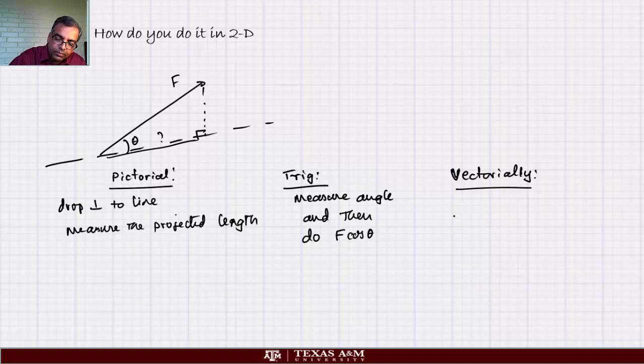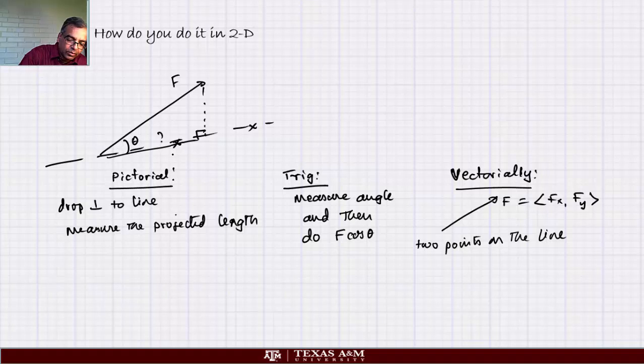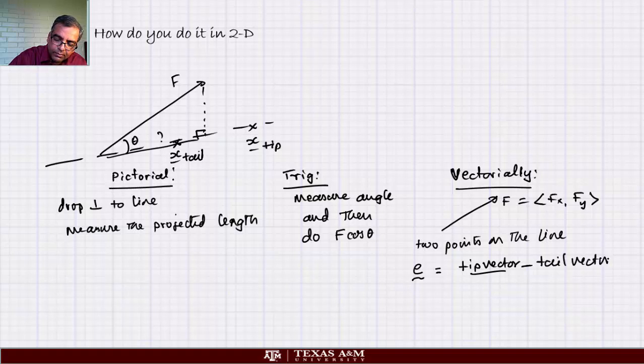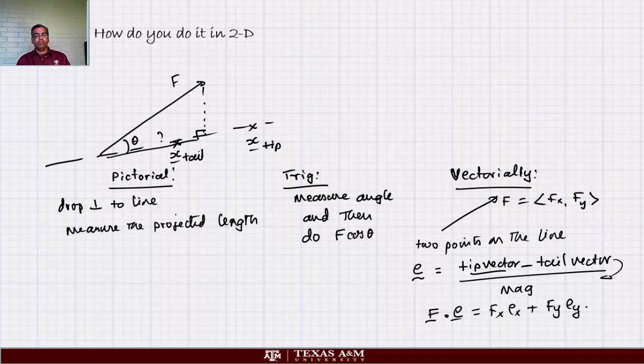Vectorially, what you do is take the force vector Fx, Fy. Then find two points on the line. This will be called X tail, and this will be called X tip. What we do is measure E equals tip vector minus tail vector divided by magnitude. Then you do F dotted with E, which is Fx Ex plus Fy Ey. That's fantastic.